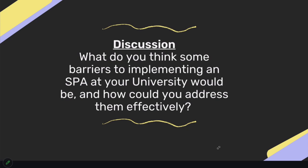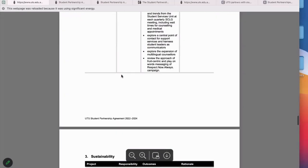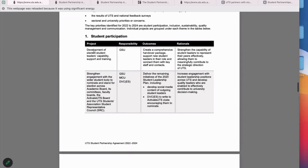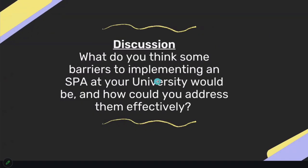In our case, continuity worked well because I had worked on the SPA with the previous law academic board member as a student who was considering the role — so we could communicate closely knowing I could continue the work. Something really important is a strong handover. We actually put this in the SPA itself: creating a comprehensive handover package to support student leaders in their roles, giving them key contacts rather than making students start from scratch. That's something many universities overlook and needs to be made aware of.